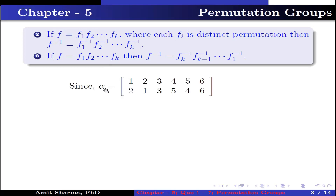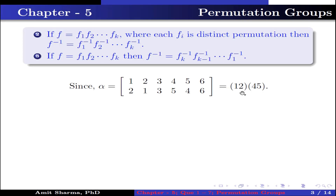Since alpha is the permutation in which 1 has image 2, 2 has image 1, 3 has image 3, 4 has image 5, 5 has image 4 and 6 has image 6, this is written in cyclic notation as (1 2)(4 5). Why? Because 1 has image 2 and 2 has image 1, so one cycle (1 2) is complete. 3 has image 3, which is an identity permutation — not required to write. 4 has image 5 and 5 has image 4, so the cycle (4 5) is complete. 6 has image 6, again identity. Therefore alpha = (1 2)(4 5).